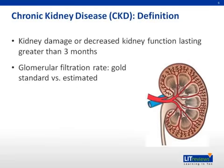Chronic kidney disease is defined as kidney damage or decreased kidney function lasting greater than three months. GFR is the usual measure of kidney function, estimated using one of several validated equations, most of which are based on serum creatinine measurements. One can also directly measure GFR using clearance of certain substances, such as iothalamate, though these measurements are generally confined to specific clinical or research settings.